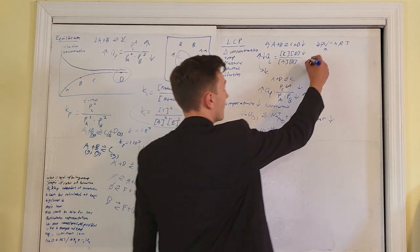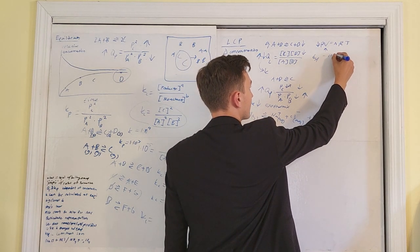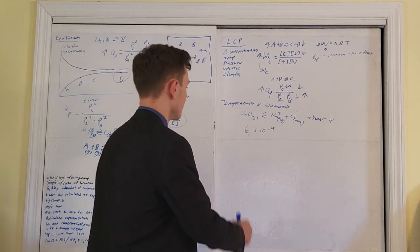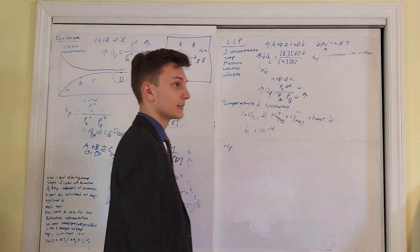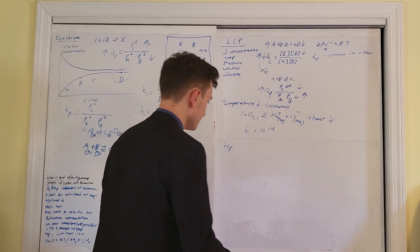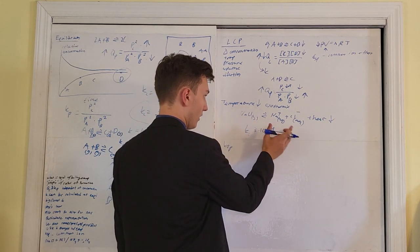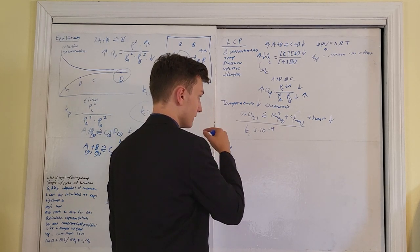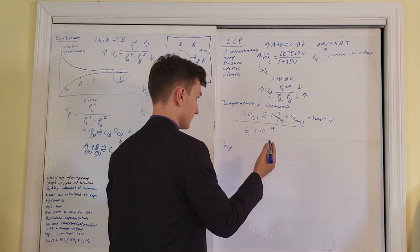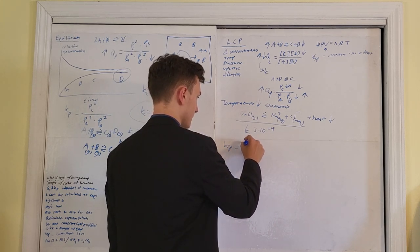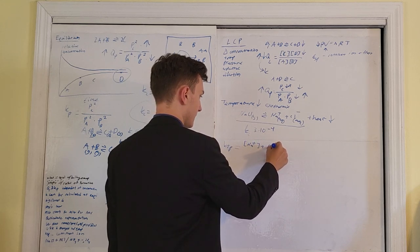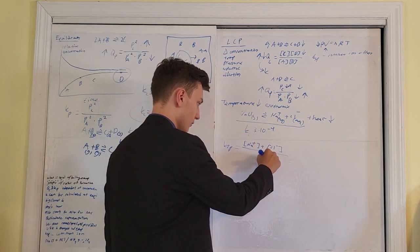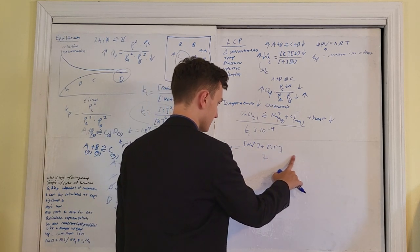Last section: Ksp and the common ion effect. Ksp is a type of K dealing with solubility. For NaCl solid dissociating into Na plus aqueous and Cl minus aqueous, Ksp equals concentration of Na plus times concentration of Cl minus — the solid NaCl doesn't appear in the denominator. A large Ksp means the substance is very soluble; a small Ksp means only a small amount dissolves at equilibrium.